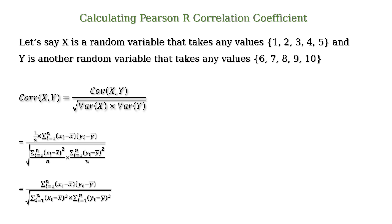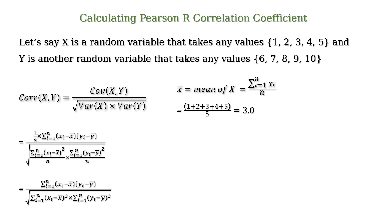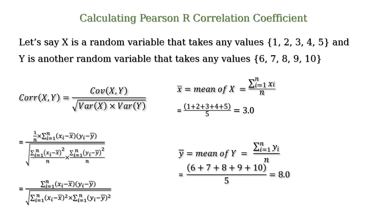As per the definition, the Pearson R correlation coefficient between x and y is equal to the covariance of xy divided by the square root of variance of x into variance of y. This equals the summation from i equal to 1 to n of (xi minus x-bar) into (yi minus y-bar) divided by the square root of the summation from i equal to 1 to n of (xi minus x-bar) squared into the summation from i equal to 1 to n of (yi minus y-bar) squared. Here, x-bar is the mean of x, equal to summation from i equal to 1 to n of xi divided by n, which is 3.0 in this example. And y-bar equals summation from i equal to 1 to n of yi divided by n, which is 8.0 in our example.